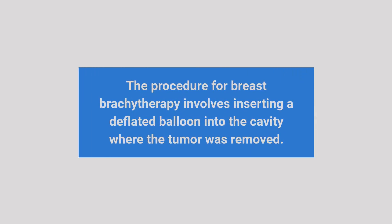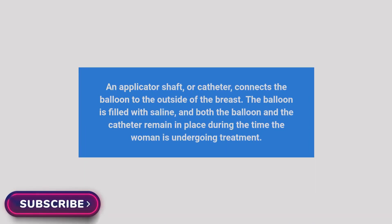Breast brachytherapy: The procedure for breast brachytherapy involves inserting a deflated balloon into the cavity where the tumor was removed. An applicator shaft, or catheter, connects the balloon to the outside of the breast. The balloon is filled with saline, and both the balloon and the catheter remain in place during the time the woman is undergoing treatment.